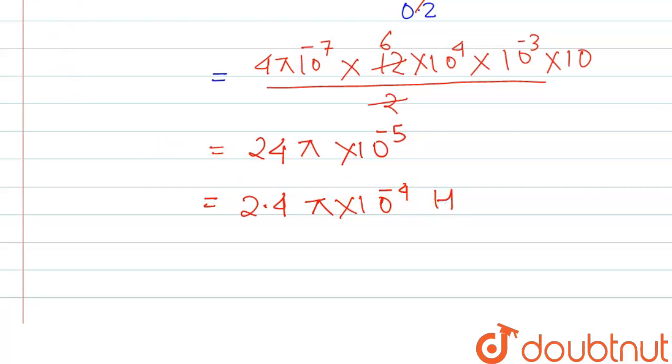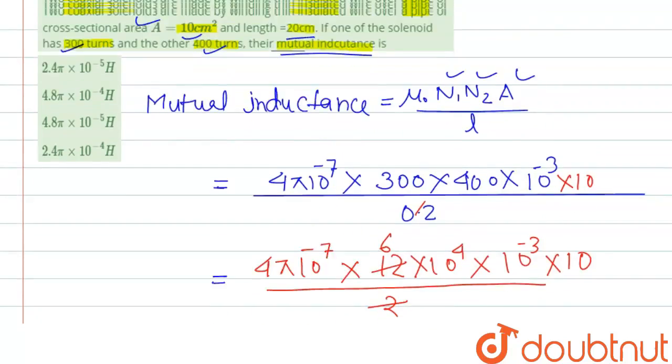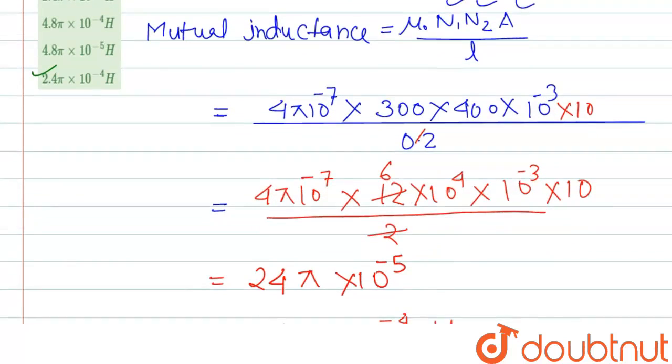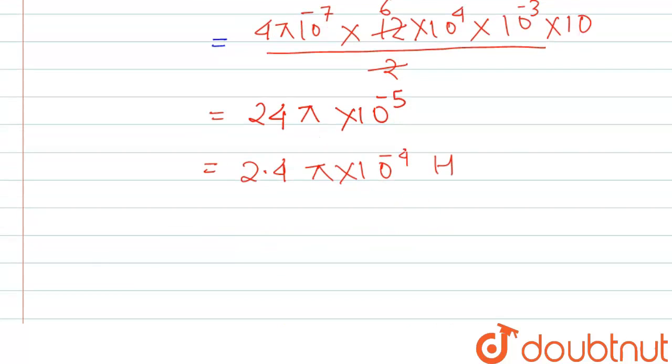So if we check the options, the option D is the correct one, so we can write the correct answer is 2.4 pi into 10 to the power minus 4 henry. Thank you.